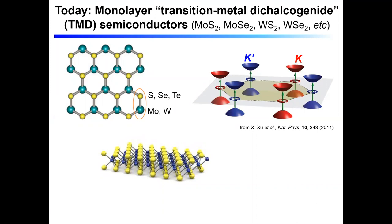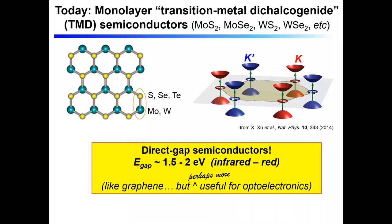In their monolayer form, when viewed from above, they have a lot in common with graphene in the sense that it's a hexagonal crystal lattice. But because there are different atoms in the unit cell and because the metal atoms — molybdenum and tungsten — are pretty heavy, instead of having Dirac cones at the K and K' points of the hexagonal Brillouin zone, it opens up a nice big semiconductor band gap. So these are direct gap semiconductors in the monolayer form, with a gap of about one and a half to two electron volts — something like infrared to red light.